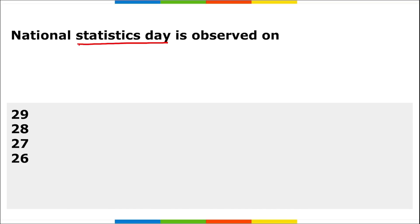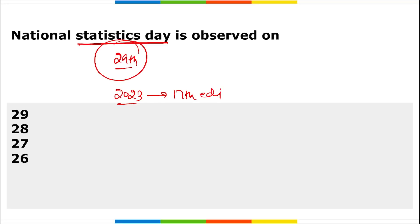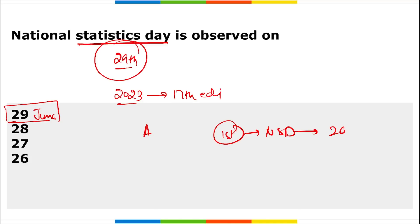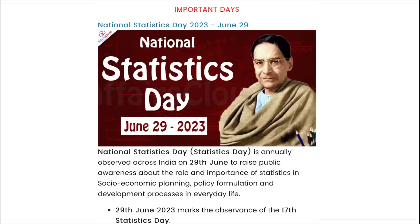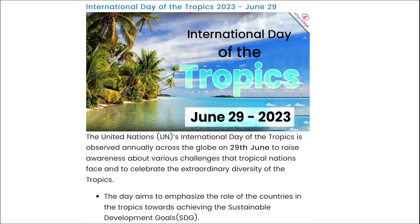National Statistics Day is annually observed on 29th June to raise public awareness about the role and importance of statistics in socio-economic planning. In 2023, it was the 17th edition of National Statistics Day. The theme is 'Alignment of State Indicator Framework with National Indicator Framework for Monitoring Sustainable Development Goals.' The first-ever edition was observed on 29th June 2007. This day is observed on the birth anniversary of Professor P.C. Mahalanobis.